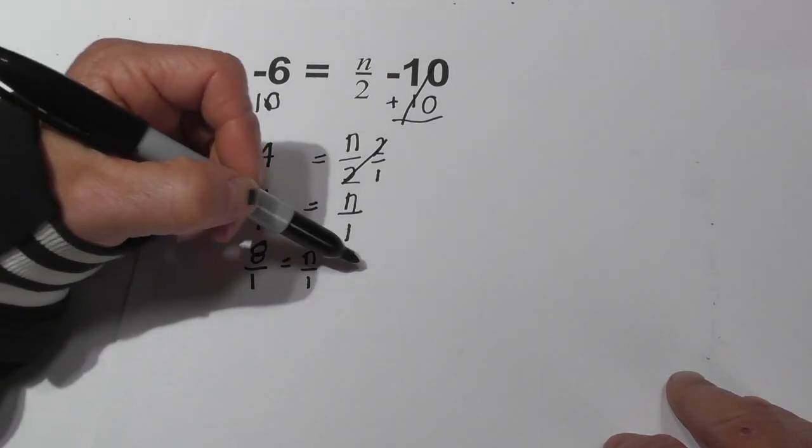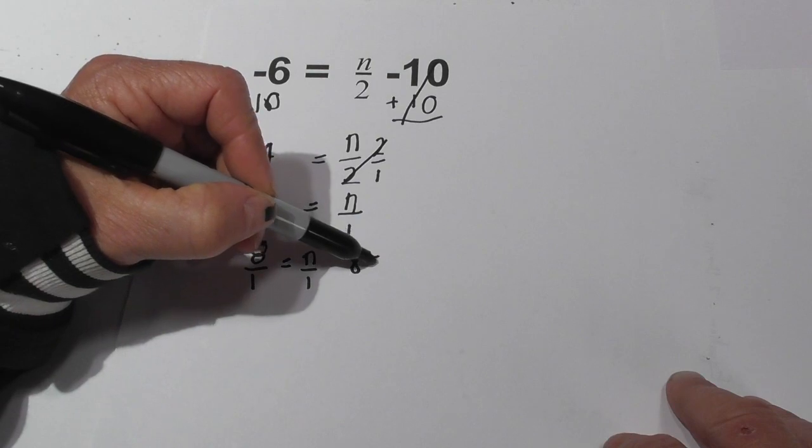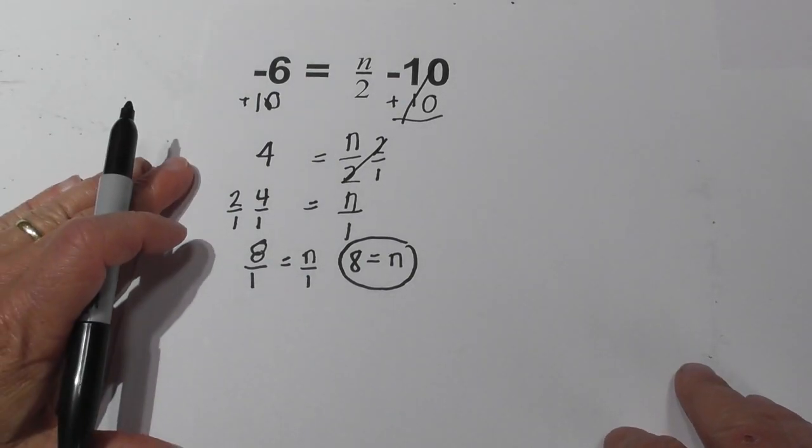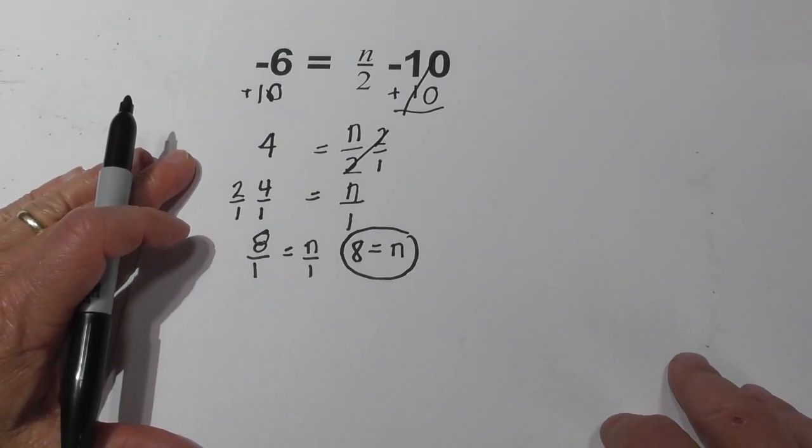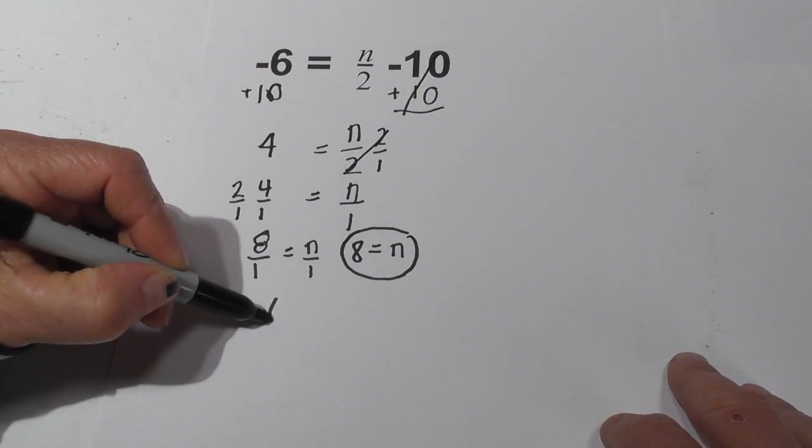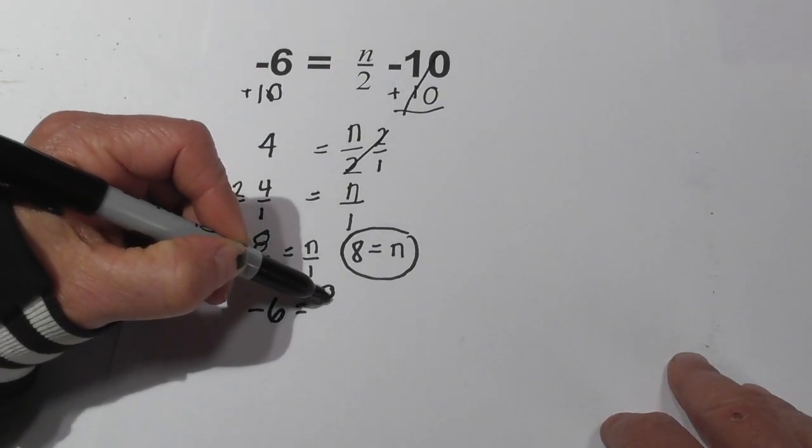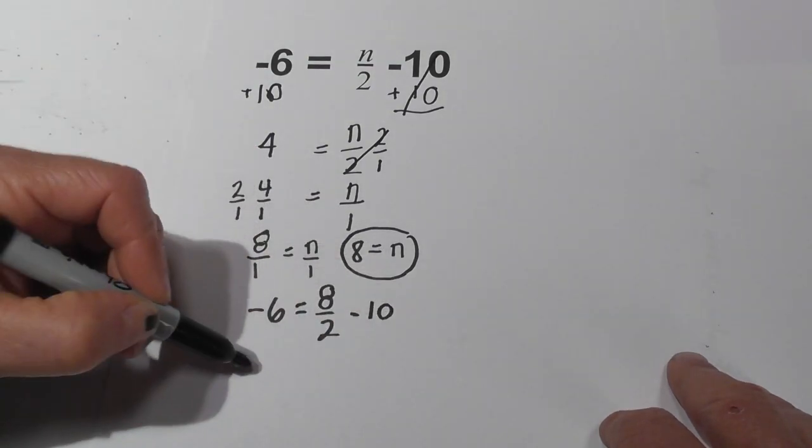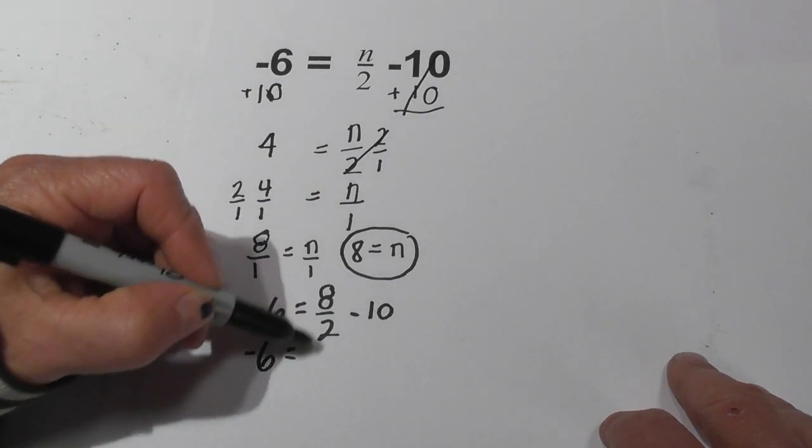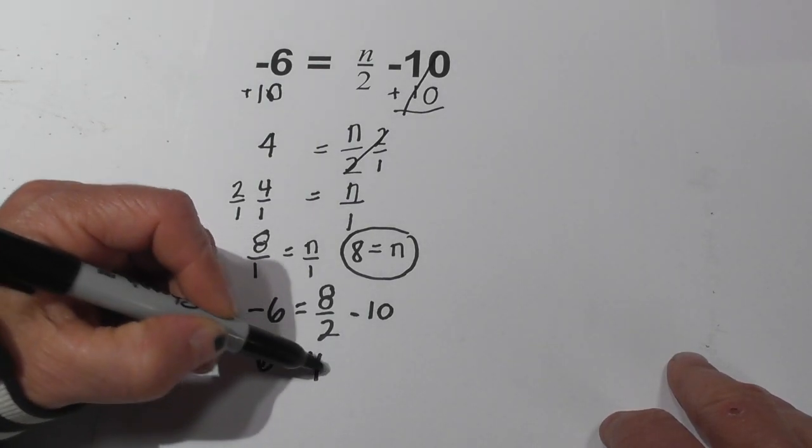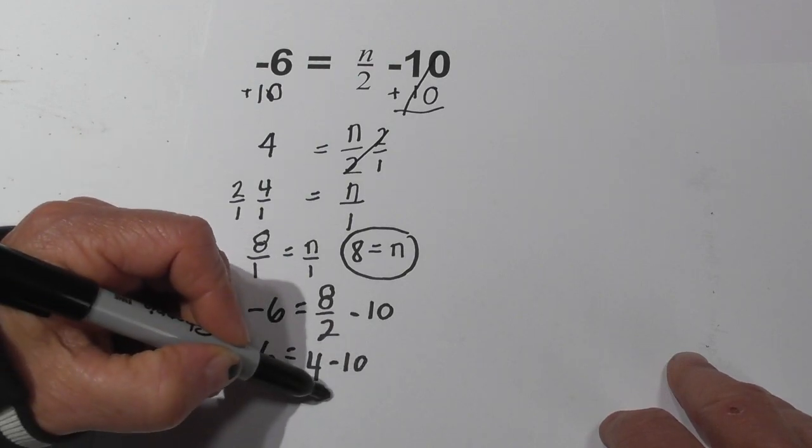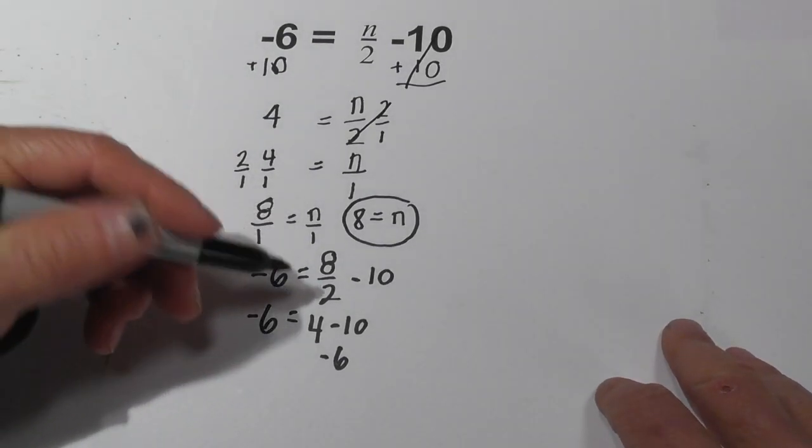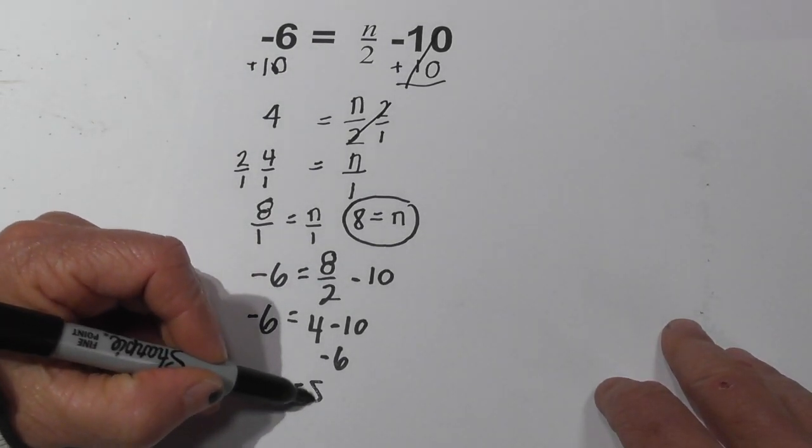And we can just rewrite that as 8 equals n. Now let's put it in the original equation and see if it works. So we have negative 6 equals 8 over 2 minus 10. Negative 6 equals 8 divided by 2 is 4 minus 10, which does indeed equal negative 6. So the answer n equals 8 is correct.